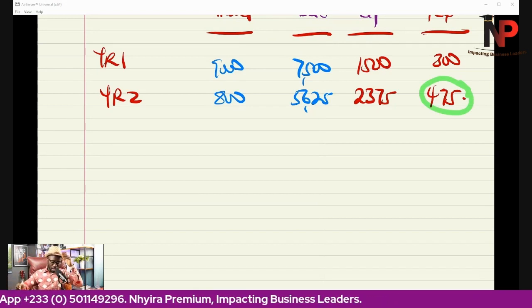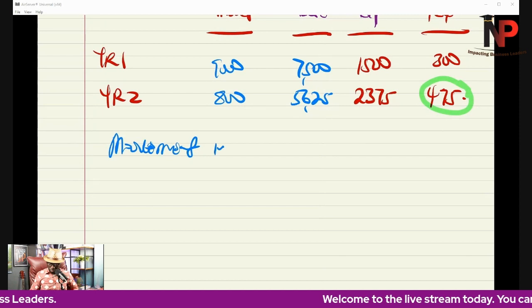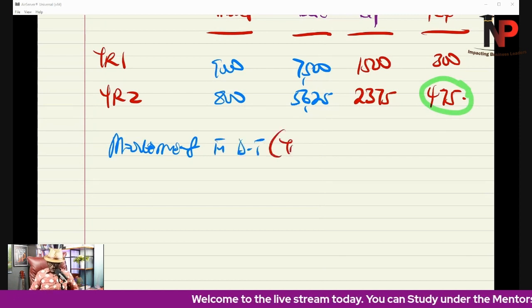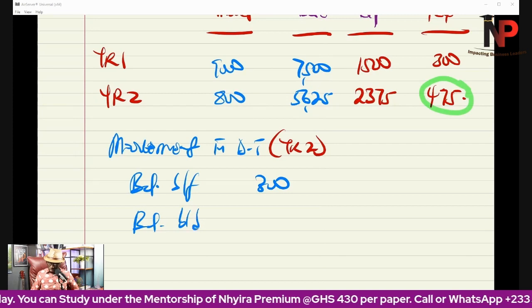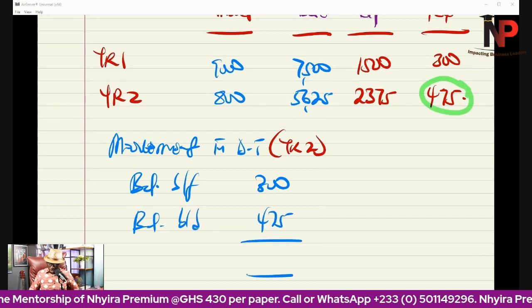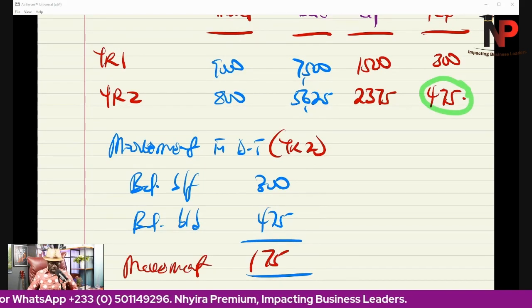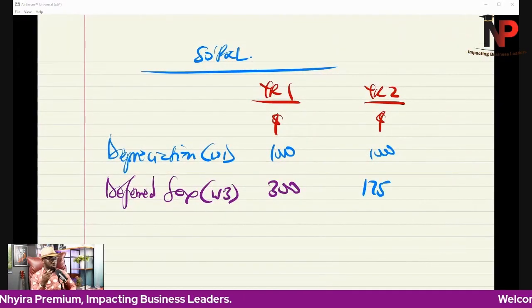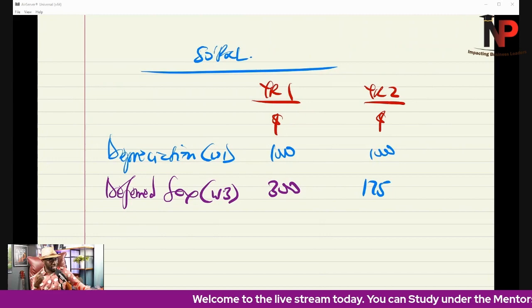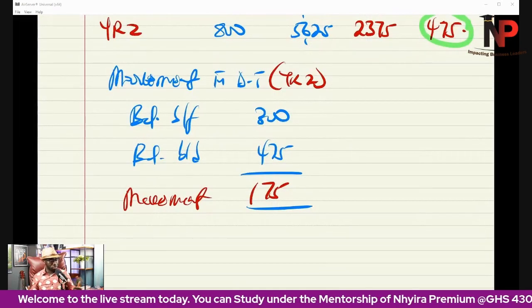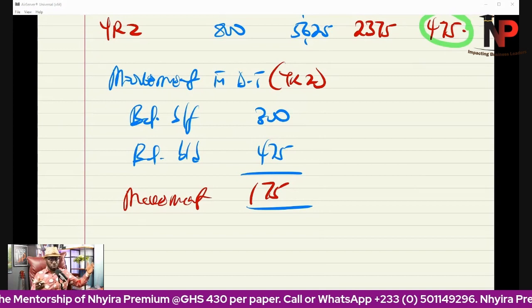In the second year, we look for movement in deferred tax — the difference between opening and closing. Balance brought forward is $300, balance carried forward is $475, so there is a movement — an increment — of $175. That $175 is what goes to the P&L account for year two. If the movement in deferred tax arose from revaluation of assets, a portion goes to OCI and the rest goes to the P&L account.